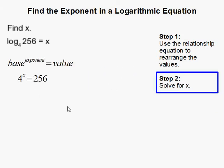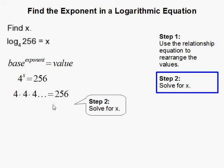Now we solve for x. If you don't have a calculator, you simply guess and check. This means that 4 times 4 times 4 times 4 — however many times — equals 256, and we need to find that number of times.